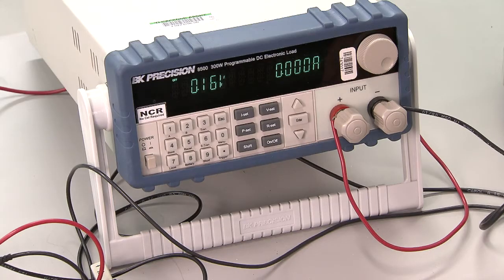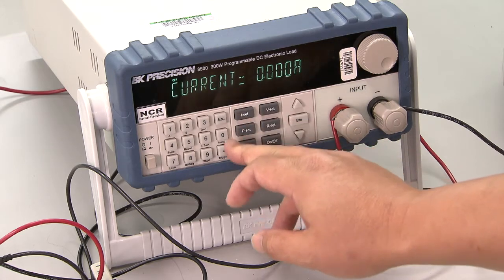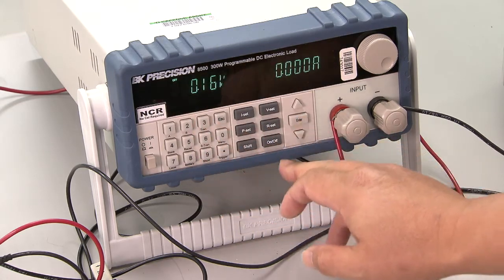Now, let's look at the power-up sequence. First, set the load between 0A to 10A, then turn on the load.